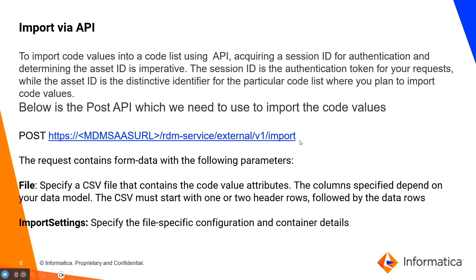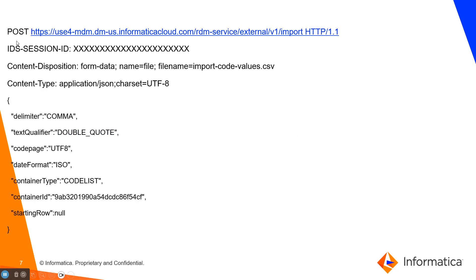This is the POST request which we will use. The pre-requisites for import via API are: the file we want to import, and the import settings. Import settings will specify the file-specific configuration and the container details. Here is one example of a POST API for importing a code list via API.